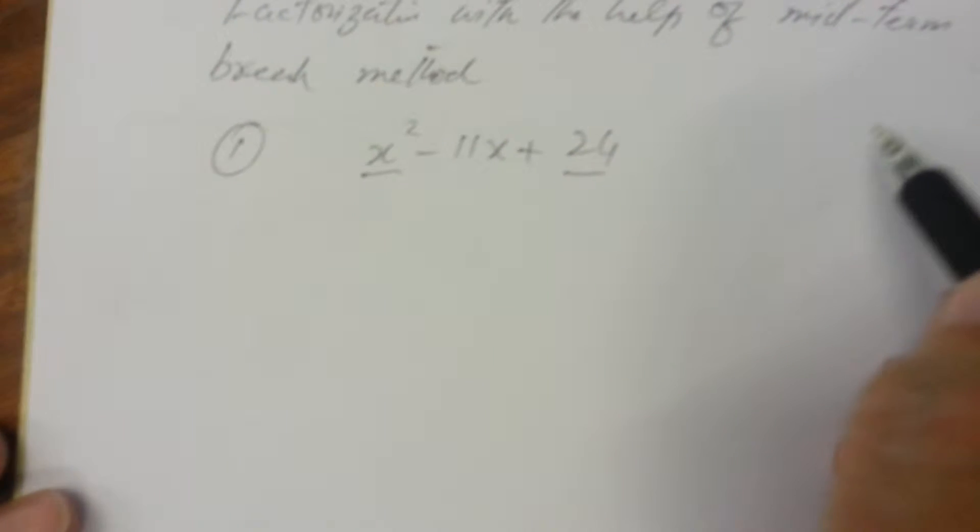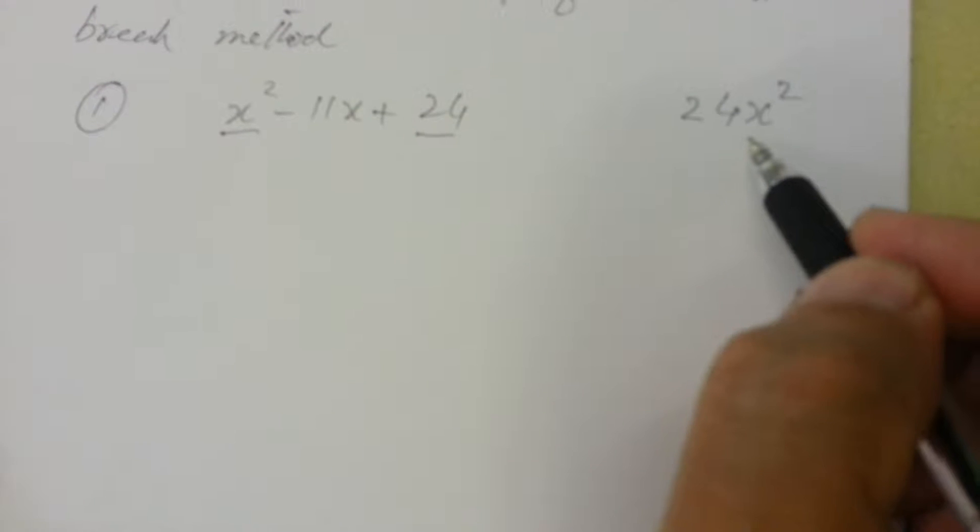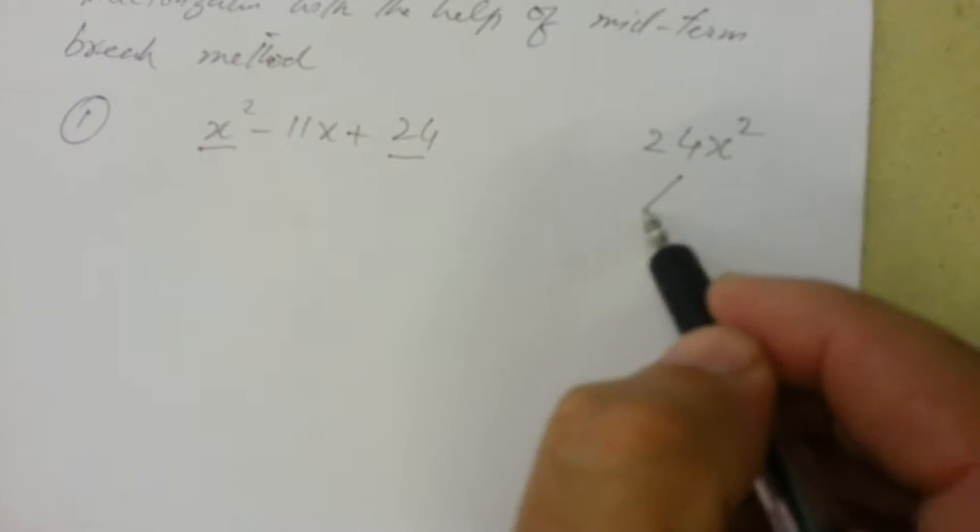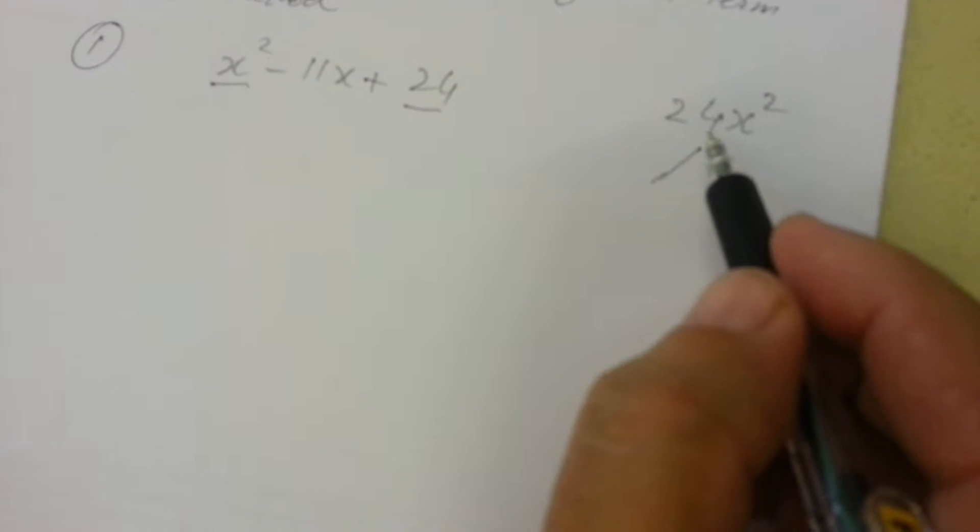Multiplying first term with the last one, the answer will be 24x squared. It is a product of two terms. Now we want two terms in such a way when we multiply these two terms the answer should be 24x squared